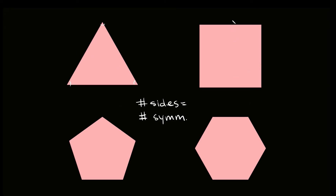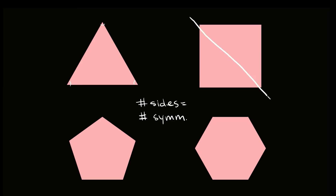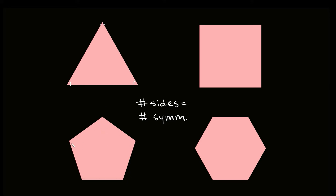Same thing on this square — four sides, so we're going to have four lines of symmetry. There's one, there's two, and then also the diagonals — there's three and four. And then here on this pentagon we have five. Straight down the middle, that's one, and we're basically going to have a line of symmetry going through each point. So we have one going through this first point, then two, then three, four, and five.